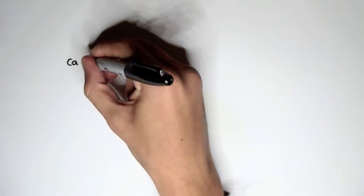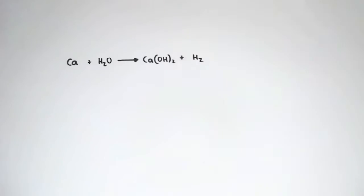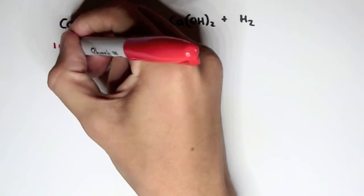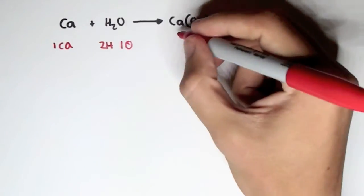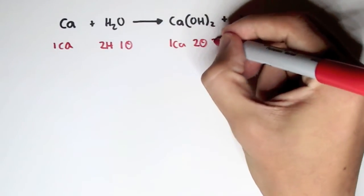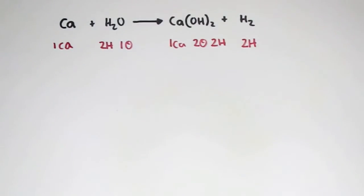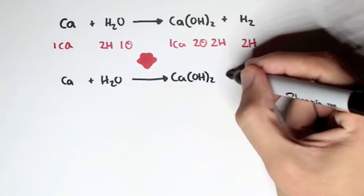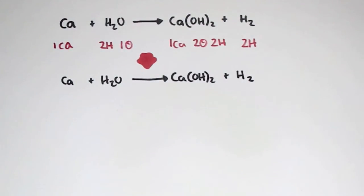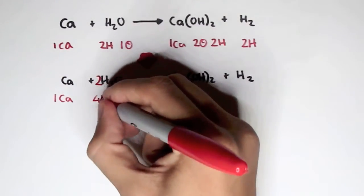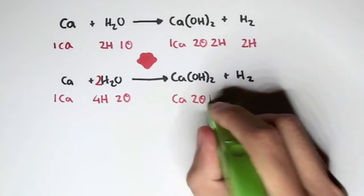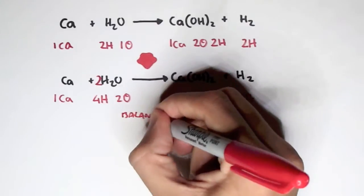Let's look at another example of balancing equations. Here we have calcium plus water, which will yield calcium hydroxide and hydrogen gas. Counting each element: we have 1 calcium, 2 hydrogens, 1 oxygen on the reactant side; and 1 calcium, 2 oxygens, 2 hydrogens, and another 2 hydrogens on the product side. This equation is unbalanced — there are extra hydrogens and an extra oxygen on the product side. If we put a 2 coefficient in front of the water, counting up again we have 1 calcium, 4 hydrogens, 2 oxygens on the reactant side, and 1 calcium, 2 oxygens, 2 hydrogens, and 2 hydrogens on the product side — the equation is now balanced.